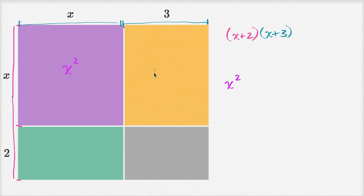What's the area of this yellow rectangle? Well, its height is x, same height as right over here. Its height is x, and its width is three. So it's going to be x times three, or three x. It'll have an area of three x.